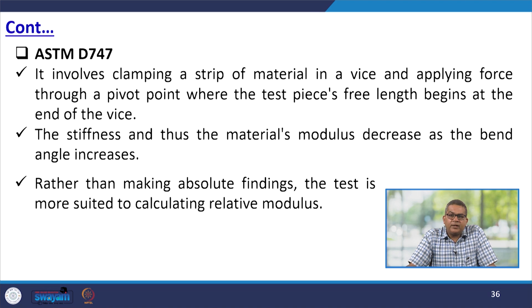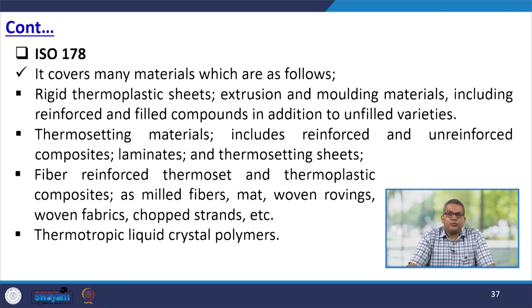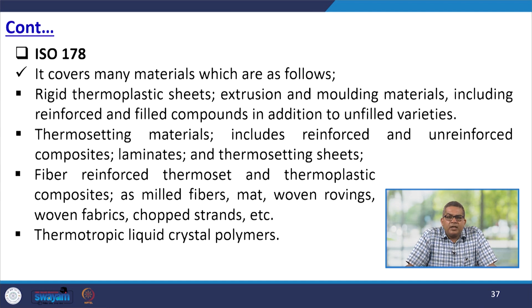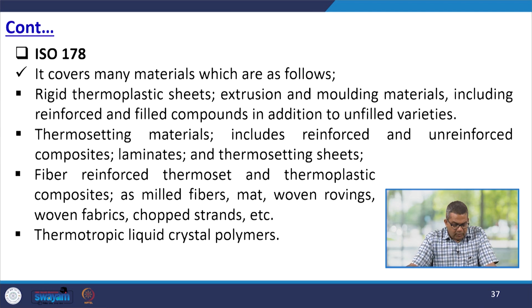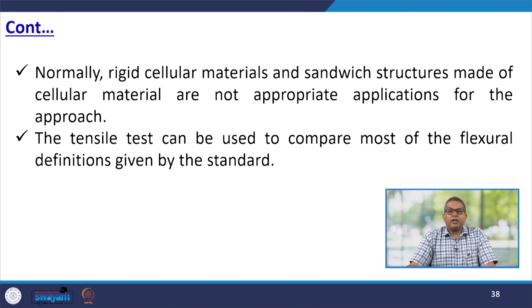ISO 178 covers many materials — rigid thermoplastic sheets, extrusion and moulding materials including reinforced or filled compounds in addition to unfilled varieties. Thermosetting materials include reinforced and unreinforced composites, laminates, and thermosetting sheets. Fibre-reinforced thermosets and thermoplastic composites include milled fibres, mats, woven rovings, woven fabrics, chopped strands, etc. Also included are thermotropic liquid crystal polymers. Normally rigid cellular materials and sandwich structures made of cellular material are not appropriate applications for this approach.